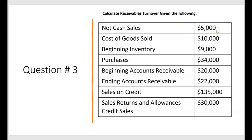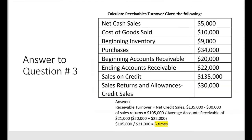Receivables turnover is net credit sales divided by average accounts receivable — that's beginning plus ending receivable divided by two. Ignore net cash sales, cost of goods sold, beginning inventory, and purchases — those are all distractors. Net credit sales is 135,000 minus 30,000 in sales returns and allowances, giving net credit sales of 105,000. Divided by average accounts receivable of 21,000, that equals five times. The receivables turnover is five times, so the ratio had to be memorized.